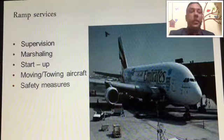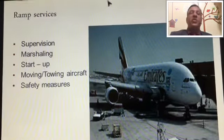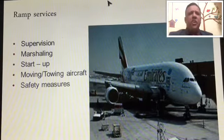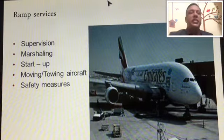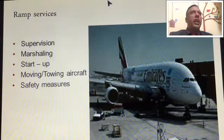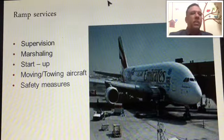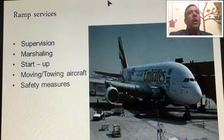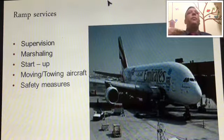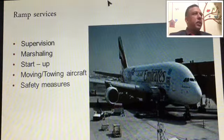Ramp services is a very important topic in airport operations. The first element is supervision — every aircraft needs to be supervised for departure and arrival. Every aircraft is monitored from the point of landing to the point of departure.